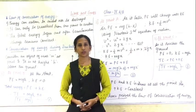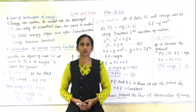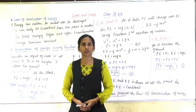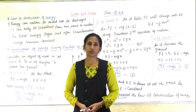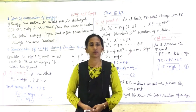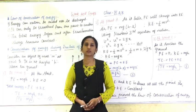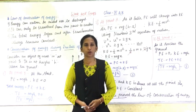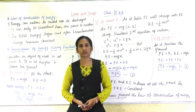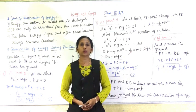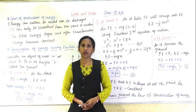Good morning students. Today we are going to study the law of conservation of energy. Till now you have studied kinetic energy and potential energy. The equation for kinetic energy is half mv squared, where m is the mass and v is the velocity. The formula for potential energy is PE = mgh, where g is acceleration due to gravity and h is the height.